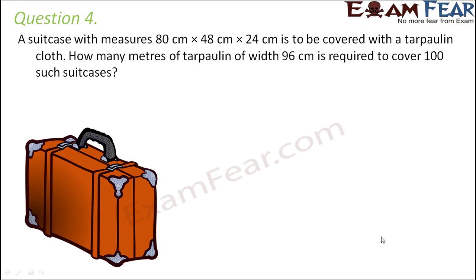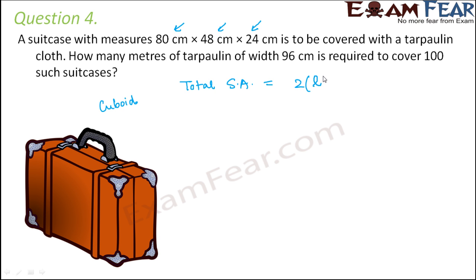Question number 4: A suitcase measuring 80 cm by 48 cm by 24 cm is to be covered with a tarpaulin cloth. How many meters of cloth of width 96 cm is required to cover 100 such suitcases? The suitcase is cuboid-shaped with length 80, breadth 48, and height 24. To cover it completely, we need the total surface area, given by 2(LB + BH + LH).